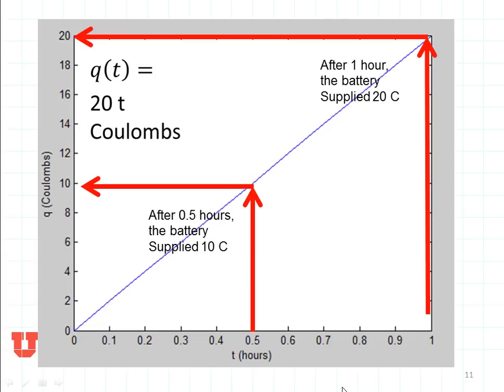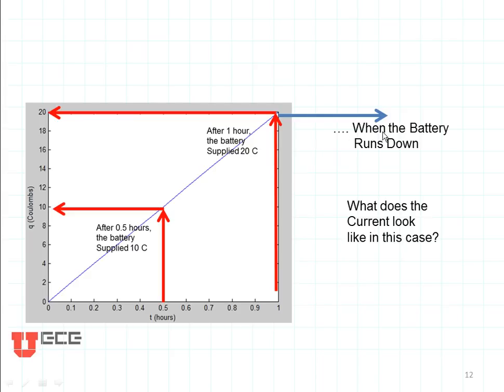Now what happens after that one hour? Well, it says the battery runs down. The battery is able to provide 20 amp hours of current. So when the battery runs down, there's no additional charge available.